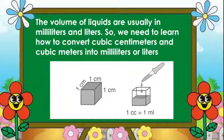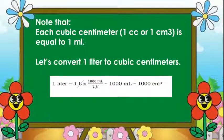The volume of liquids are usually in milliliters and liters, so we need to learn how to convert cubic centimeters and cubic meters into milliliters or liters. Note that each cubic centimeter or 1 cc is equal to 1 milliliter. When we convert 1 liter to cubic centimeters, that becomes 1 liter times 1000 milliliters over 1 is equal to 1,000 milliliters. This means there is 1,000 cubic centimeters for every 1 liter, which is also equivalent to 1,000 milliliters.